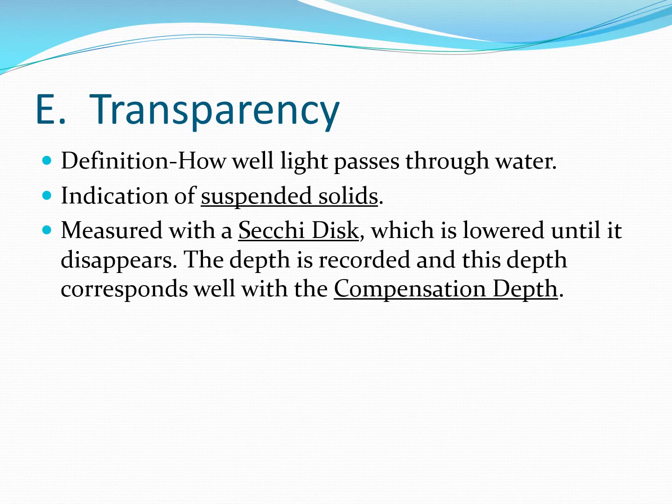To measure transparency, we use a device called a Secchi disk. The Secchi disk is lowered into the water until it reaches a depth where it disappears, then raised up a little bit until it reappears, fine-tuning to find exactly that depth. That depth corresponds to something we call the compensation depth — the depth at which the amount of respiration and the amount of photosynthesis are equal to one another, where the oxygen taken up by living things equals the oxygen being made by plankton and plants.